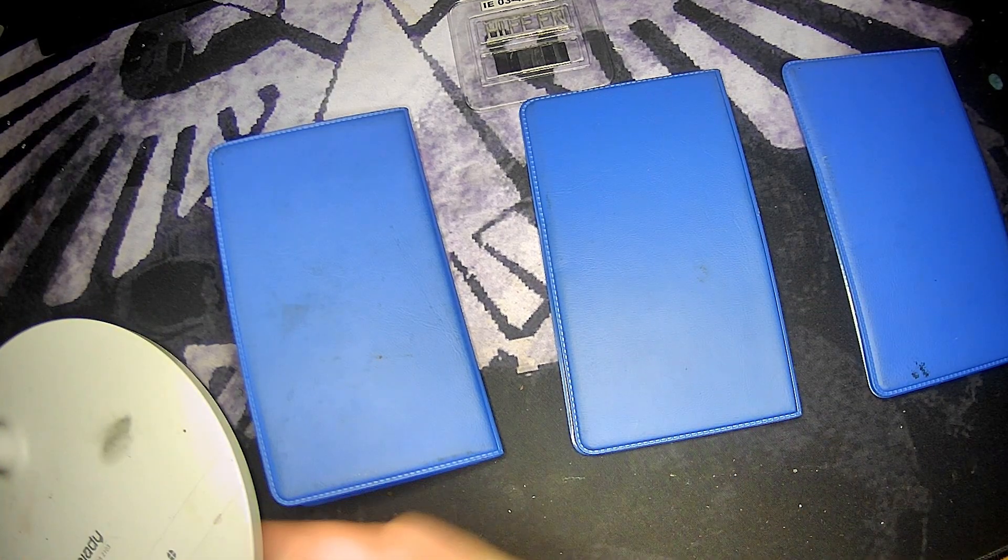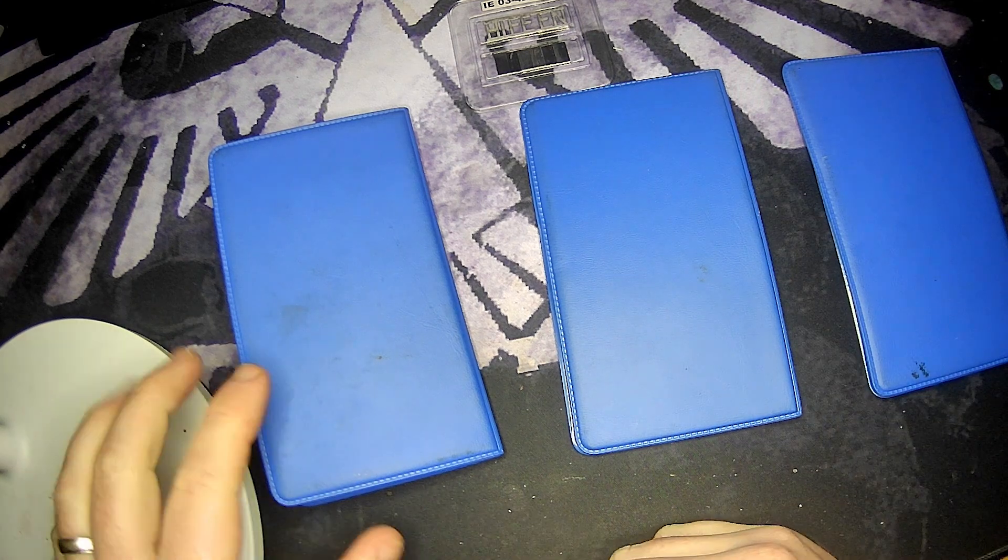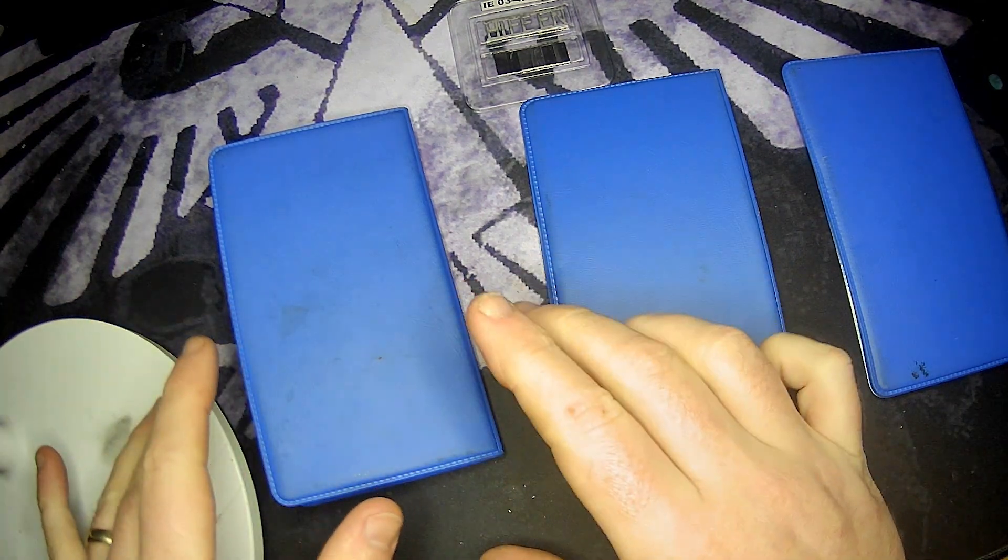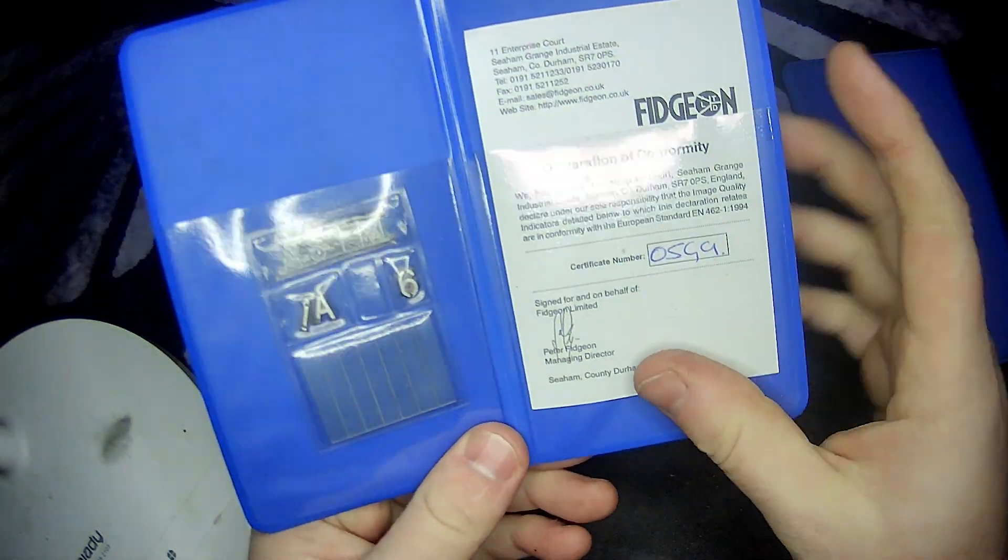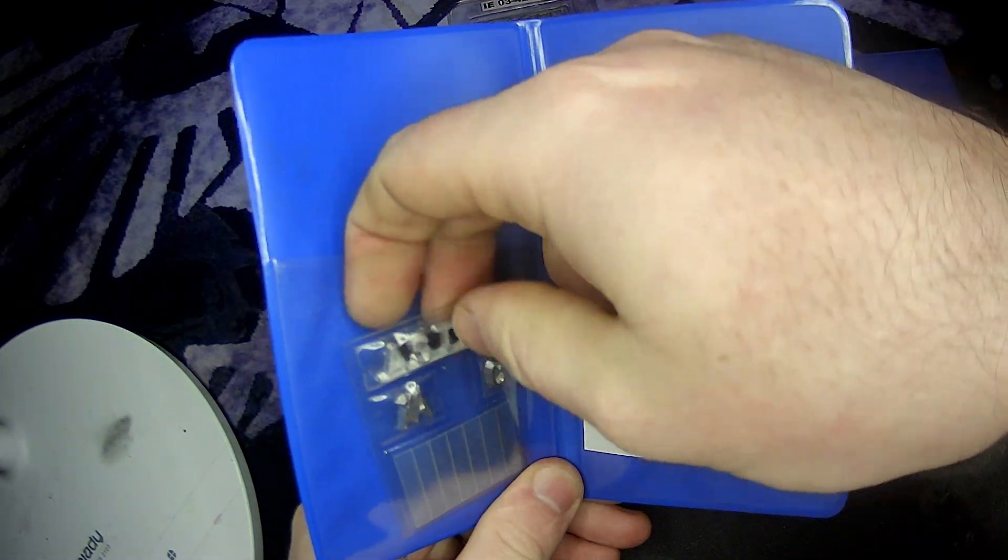So IQIs, what are they? What do they look like? How do we identify them and make sure everything's okay? Well, first packet here, what we've got, if I open it up, I've got my IQI here, so I'll take this out.